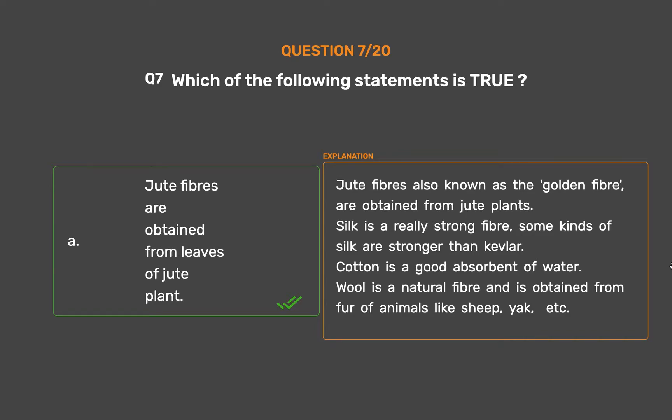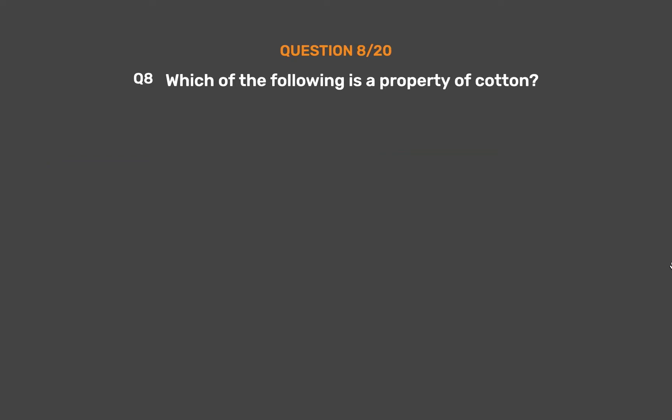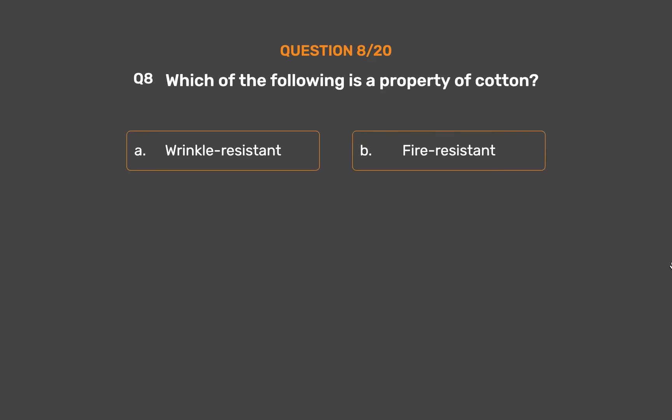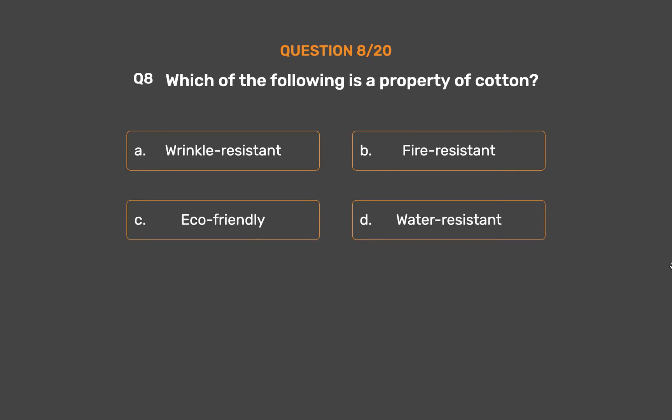Question number 8. Which of the following is a property of cotton? Option A, Wrinkle resistant; Option B, Fire resistant; Option C, Eco-friendly; Option D, Water resistant.